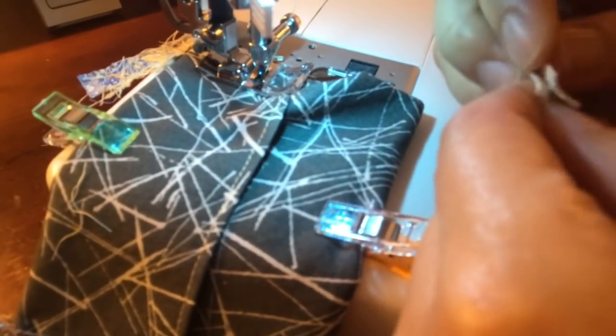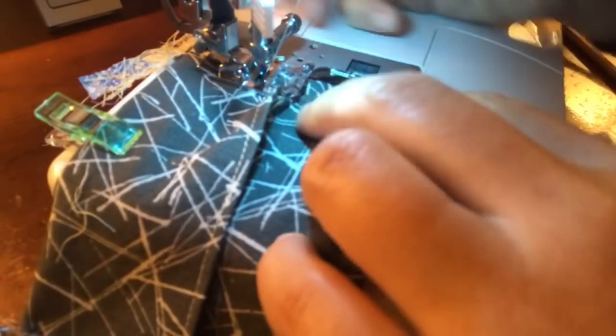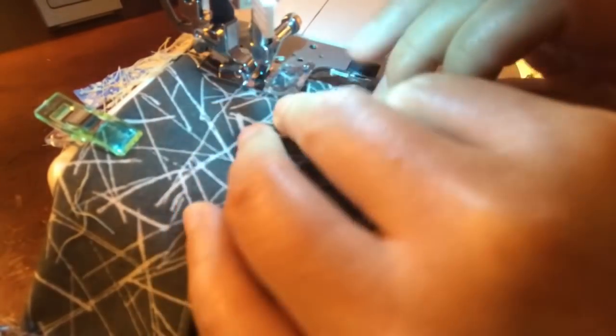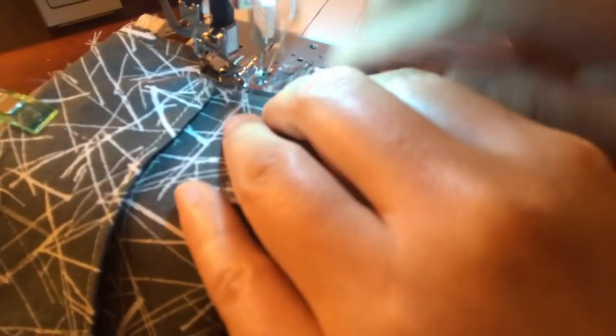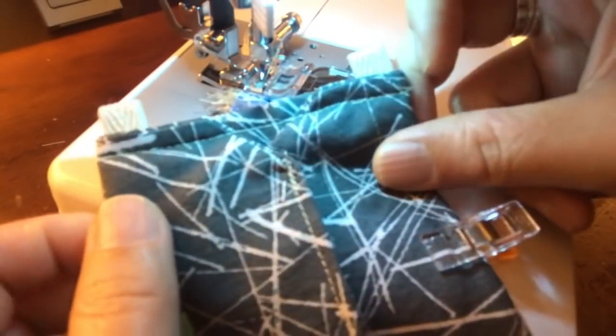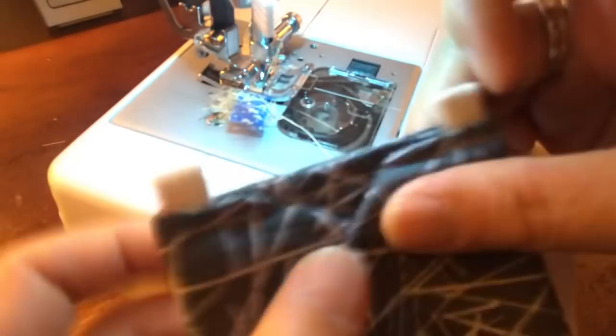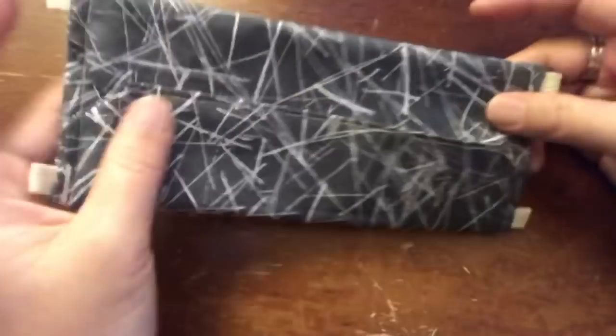Then we'll insert this one on the bottom. Backstitch a little bit to make sure it's secure. This is our guard, and then you just do the same with the other side. We have all 4 tabs secured in spot, and this is the back side.